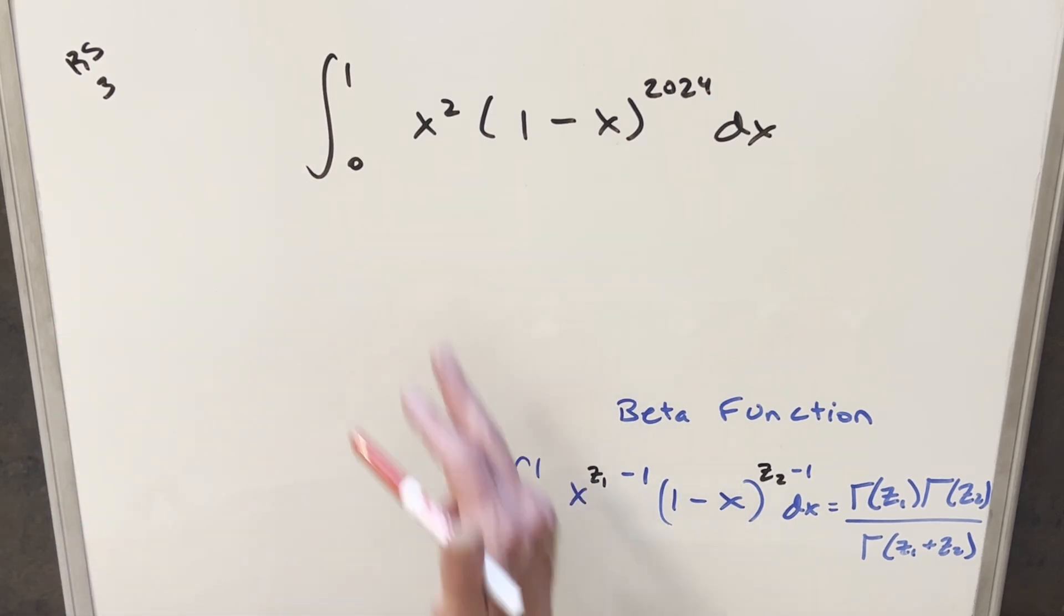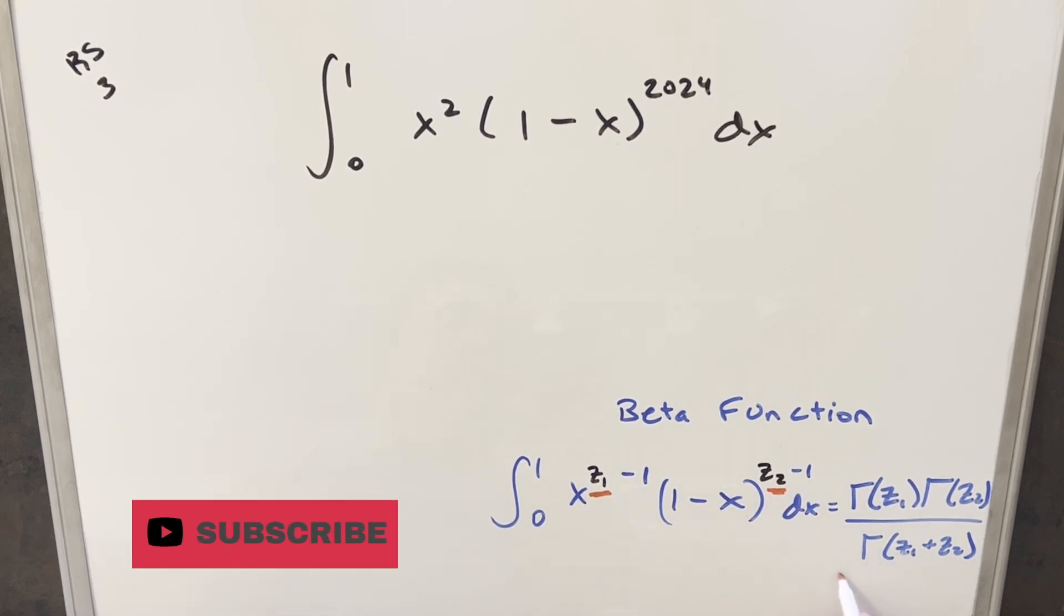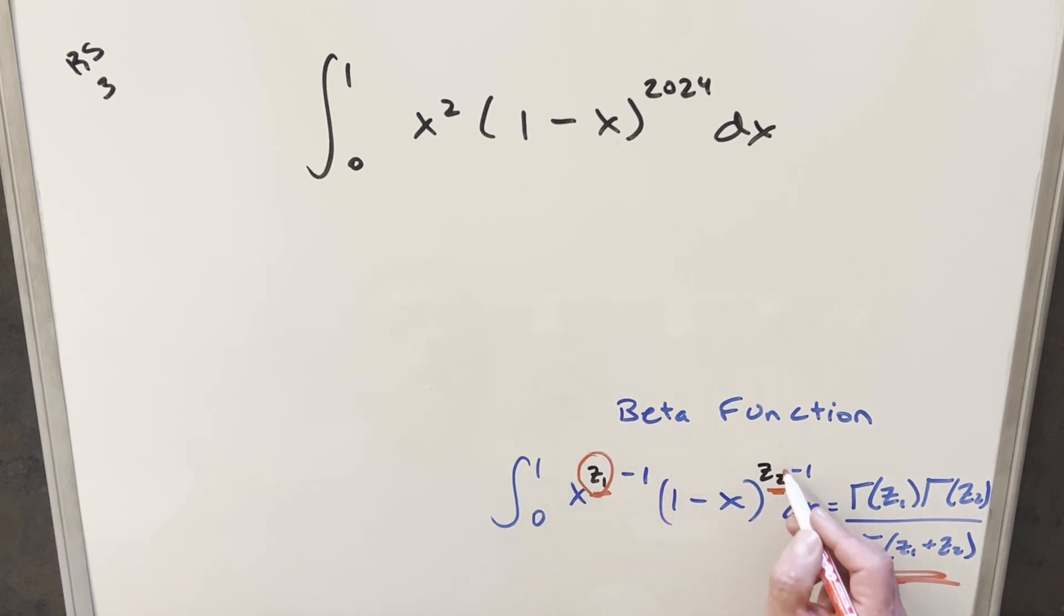We get the same bounds here going from zero to one. We've got our x with an exponent. We've got one minus x. Now, the thing what we need to do is we just need the z1, z2 value, and then we have our solution over here in terms of the gamma function.